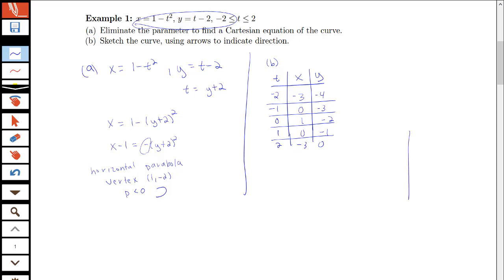We can go ahead and sketch those points. Let's see, I have the point (-3, -4), so we get a point down here. Then we have the point (0, -3), so we have a point here. We have the point (1, -2), so we have a point right here. We have (0, -1). And then we have (-3, 0).